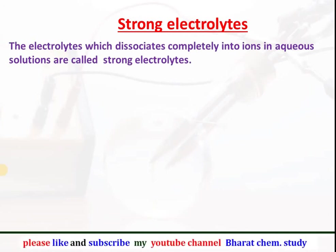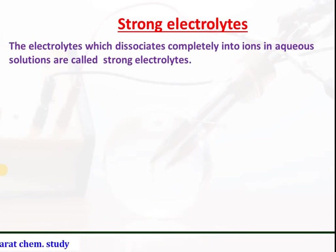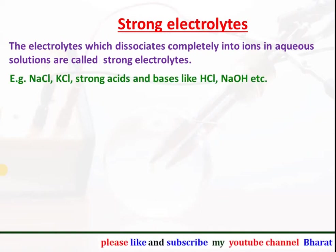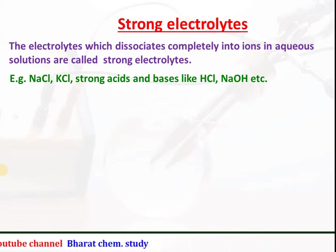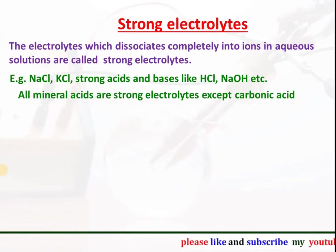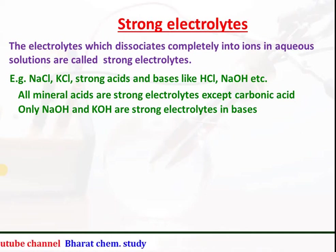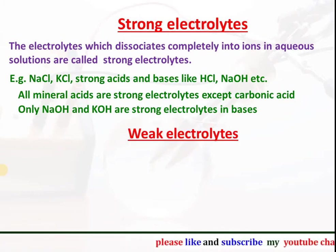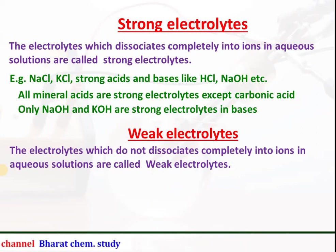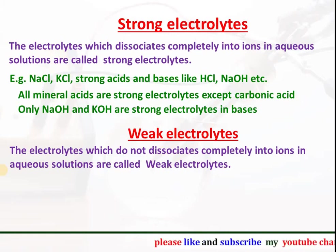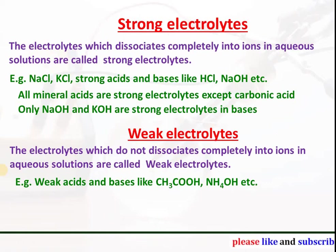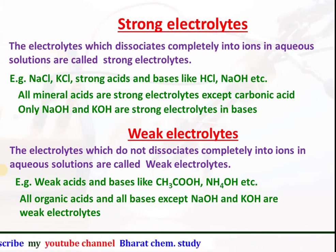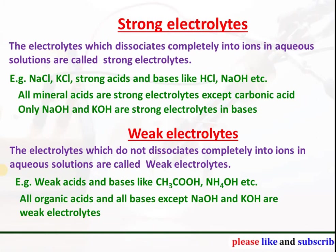Strong electrolytes: the electrolytes which dissociate completely into ions in an aqueous solution are called strong electrolytes. For example, ionic salts like NaCl and KCl in their solution or molten form, and strong acids and bases like HCl and NaOH. All mineral acids are strong electrolytes except carbonic acid. Only NaOH and KOH are strong electrolytes among bases. Weak electrolytes do not dissociate completely into ions in aqueous solutions. For example, weak acids and bases like acetic acid and ammonium hydroxide. All organic acids and all bases except NaOH and KOH are weak electrolytes.